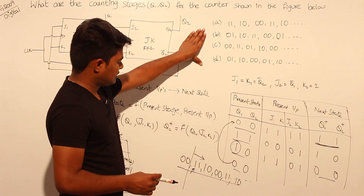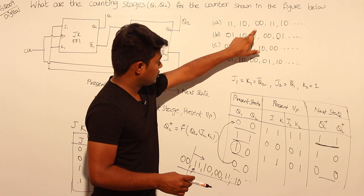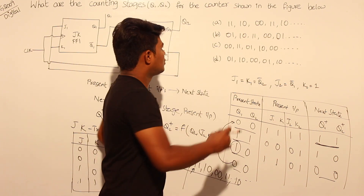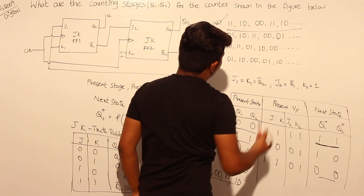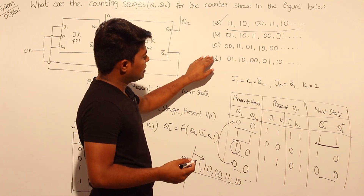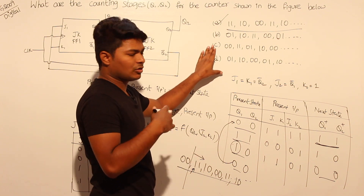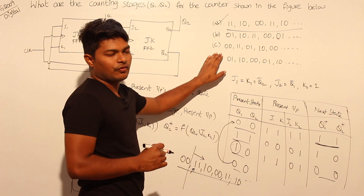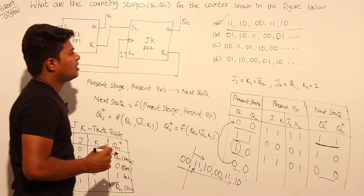Looking at the options, we see the sequence 11, 10, 00, 11, 10 and so on. Option A is the correct answer. No other sequence in the other options matches this — they either have one term missing, two terms missing, or are not present at all. So option A is the correct answer.